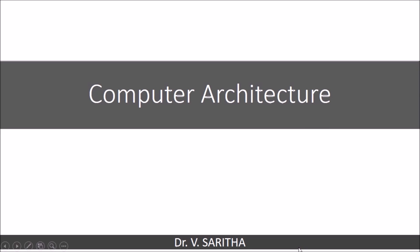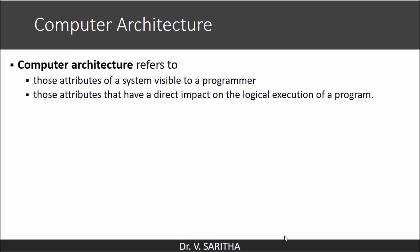This video will help you to learn about computer architecture, organization, and the functional components of a computer. First, we will see the definition of computer architecture. It includes those attributes of a system visible to a programmer — whatever a programmer is required to know to program or develop an application, the knowledge they will have about the computer. Those attributes we can refer to as computer architecture concepts.